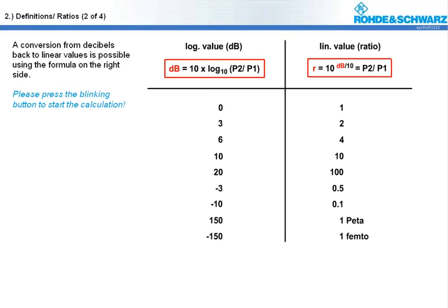Please note that linear ratios being smaller than 1 yield negative log values. Never call them negative ratios, that's not correct.